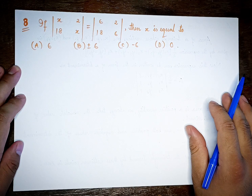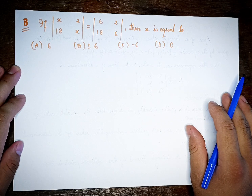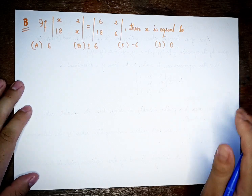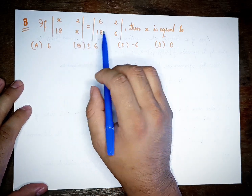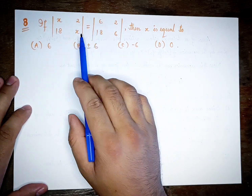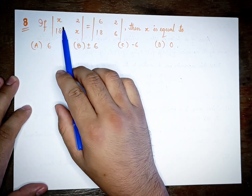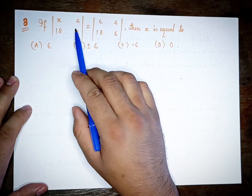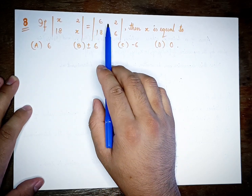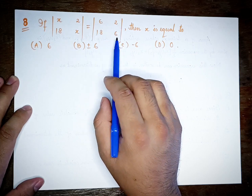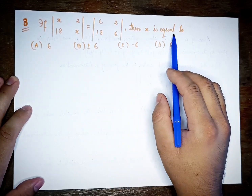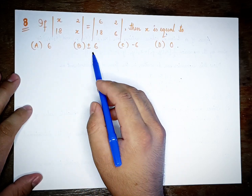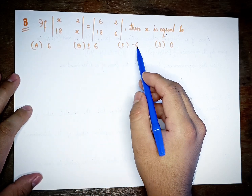Exercise 4.1, last question — question number 8. If the left side of the determinant is |x, 18x| and the right side of the determinant is |6, 18x|, then x is equal to: option A is 6, option B is plus or minus 6, option C is minus 6, option D is 0.